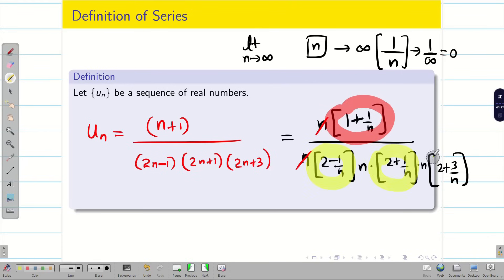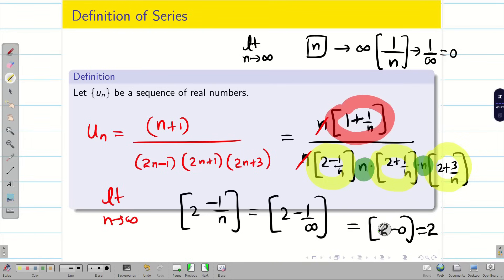Now, see, this term, all these three terms will not be affected when I apply infinity. Why? This 2 minus 1 by n, when I apply infinity, it will become 2 minus 1 by infinity. That is simply 2 minus 0, which is 2. This is finite. Only these green terms are going to trouble me. Because here I cannot do anything with this n. When you apply infinity, it will become 1 by infinity because the n is in the denominator.